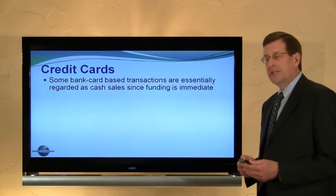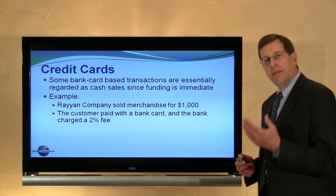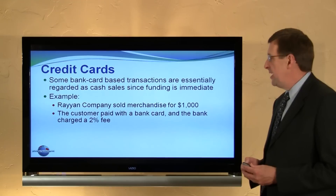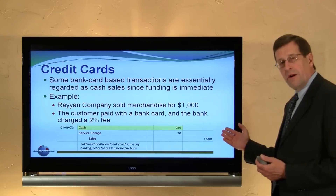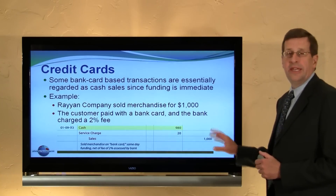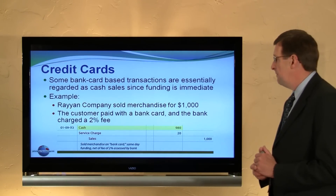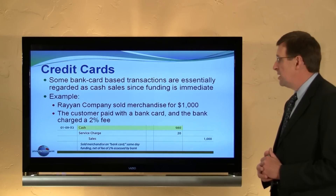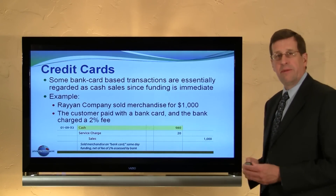Some bank card transactions are essentially the same as cash. For example, Ray Ann Company sold merchandise for $1,000. The customer used a credit card with a 2% fee charged at the time the card was used. In the journal entry, while the company has a $1,000 sale, they also have a $20 service charge expense to record, reflecting a $980 net. With bank credit cards, there's real-time or near real-time processing, so the merchant receives their money within a day or two of the actual sale. If a customer used a debit card, it would be essentially the same type of transaction, simply drawing directly on the customer's bank deposits rather than through a credit card company.